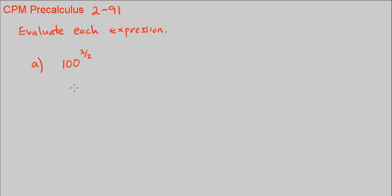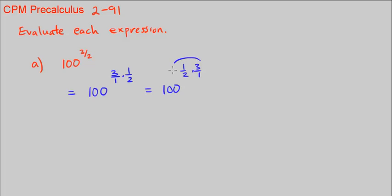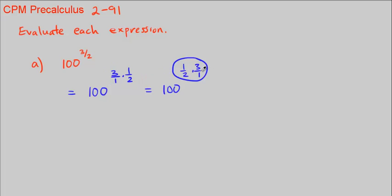For part A, we know 100 to the power of 3/2 is the same thing as 100 to the power of 3 over 1 times 1 half. We can do multiplication in any order, so this is the same as 100 to the power of 1 half times 3 over 1. These are the same thing — just swapping which one we're multiplying first.